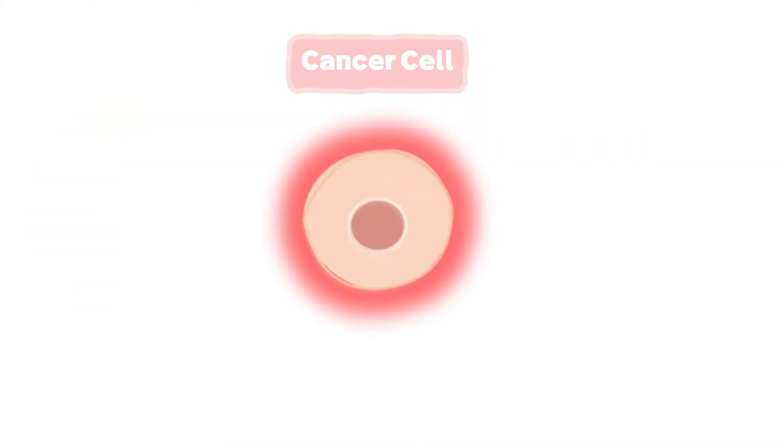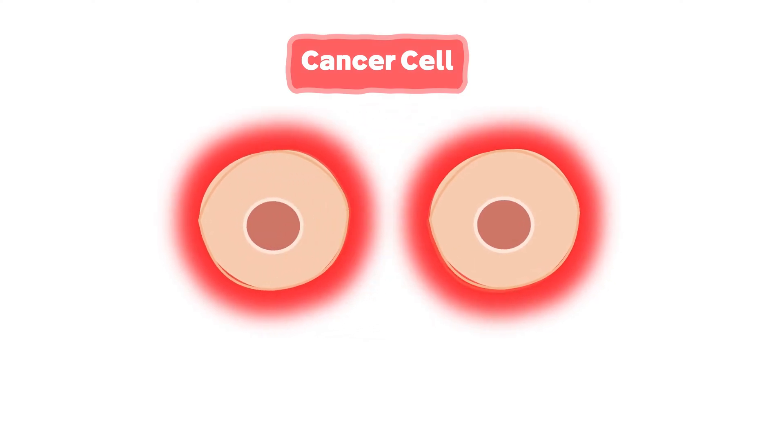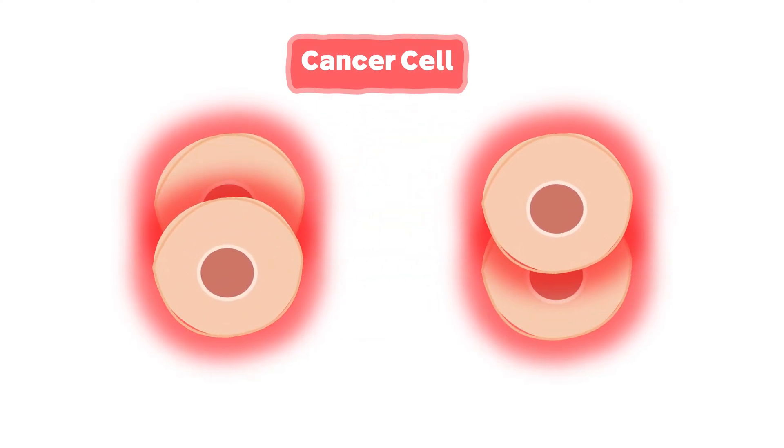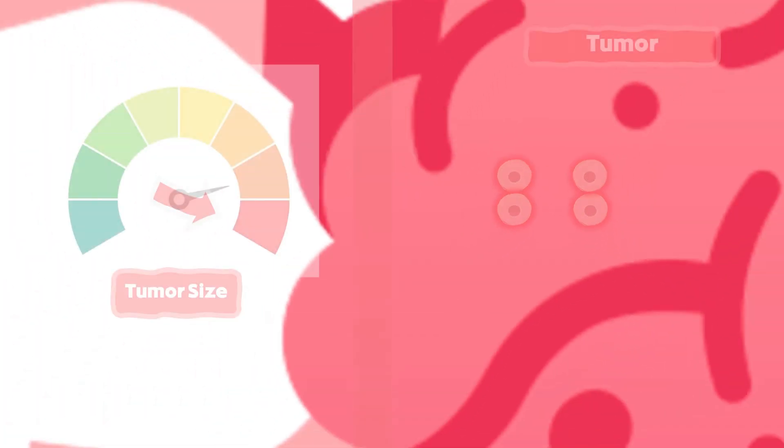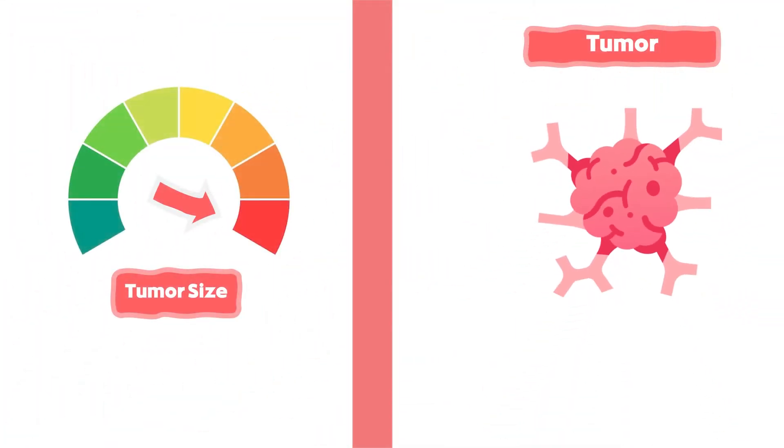As you know, cancer cells that are not receiving any treatment will continue to divide non-stop to form what's called a tumor, and upon alkylating agent's administration, these tumors will shrink in size, but sometimes they become resistant and return to grow again.